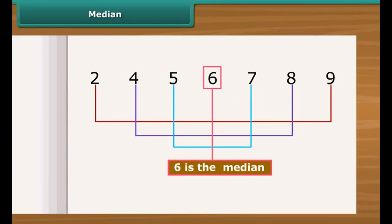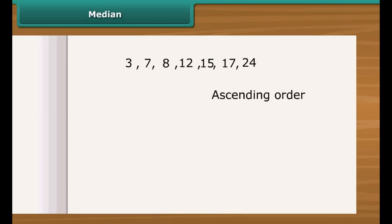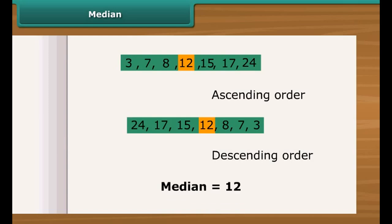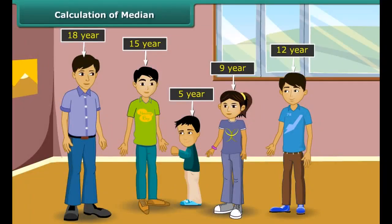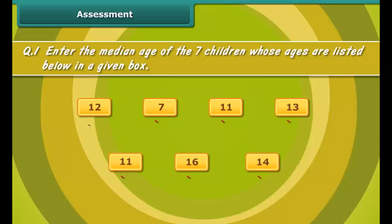Median is the value which lies in the middle of a group of numbers that have been arranged in order by size. To find the median, put the numbers in ascending or descending order. For example, the middle number is 12 — it has three numbers to its right and three to its left, so the median is 12. The Goyanga family has five children aged 9, 12, 5, 18, and 15. Ordering from least to greatest, the age of the middle child — the median — is 12.